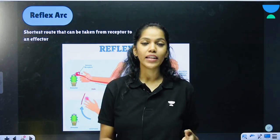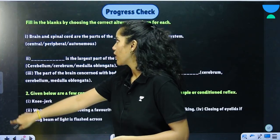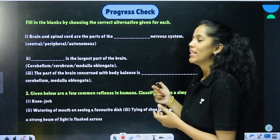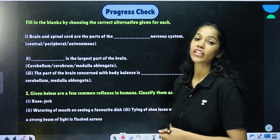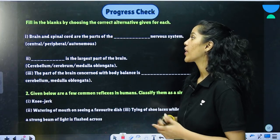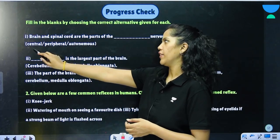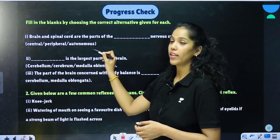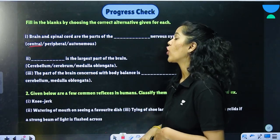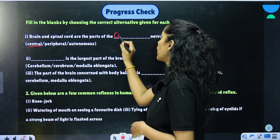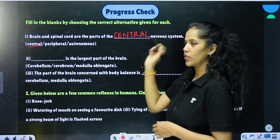Now let's move to a small progress check — pause and answer. Fill in the blanks by choosing the correct alternative. Brain and spinal cord are the parts of the ___ nervous system. Is it the central, the peripheral, or the autonomous? The answer is the central nervous system.